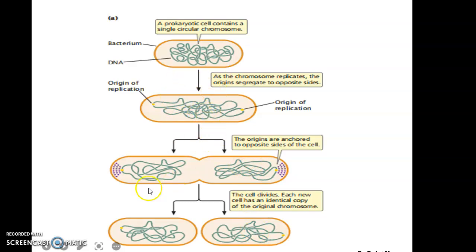Each new cell has an identical copy of the original chromosome. Under optimal conditions, a bacterium can complete binary fission within 20 minutes.